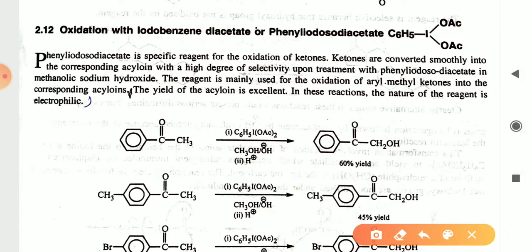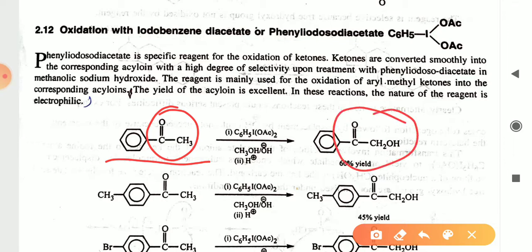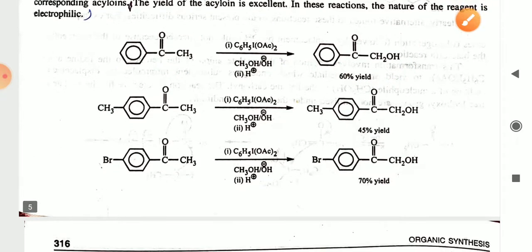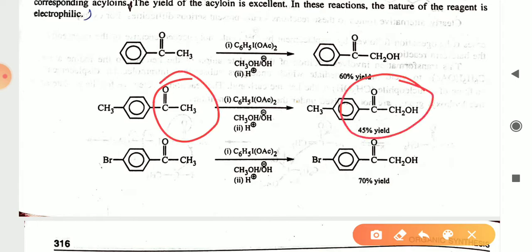Here you can see a simple reaction: the oxidation of aryl methyl ketone into the acyloin in presence of phenyl iodosodiacetate. This is another example where the aryl methyl group is converted into the acyloin, and the methyl aryl group is also converted into the acyloin.